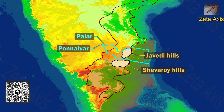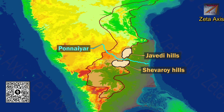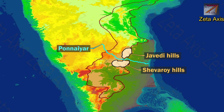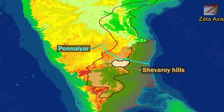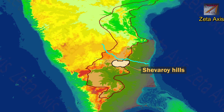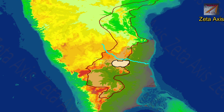The next important mountain range is the Shevaroy hills. The Shevaroy hill range is situated in the north-east of Salem district of Tamil Nadu. The Ponnai river separates the Shevaroy hills from the Jawadi hills and flows from the northern side of the Shevaroy hills. The Shevaroy hills have lateritic soils rich in hydrated alumina and bauxite, with mainly red sandy loam soil. The Shevaroy hills are also known for their coffee plantations.